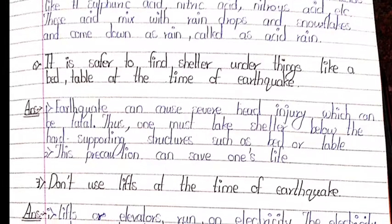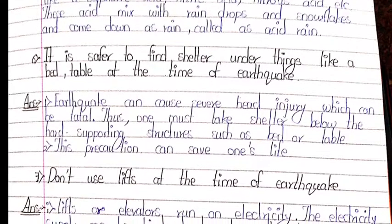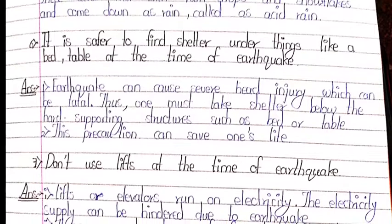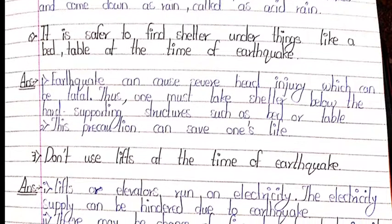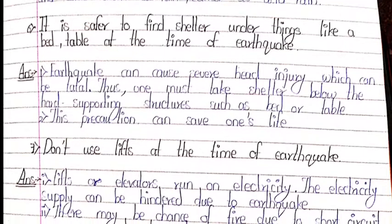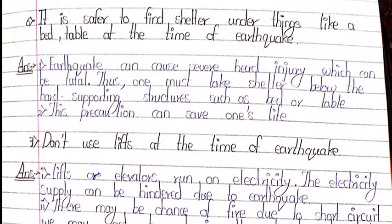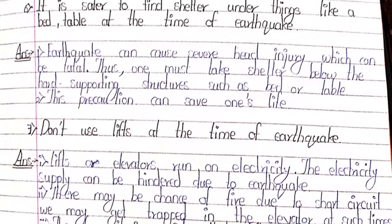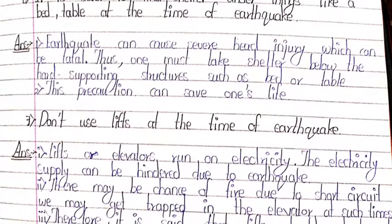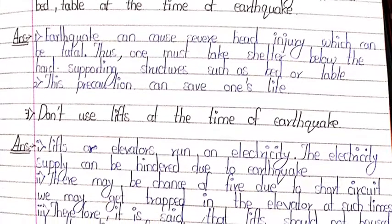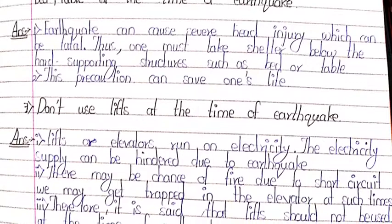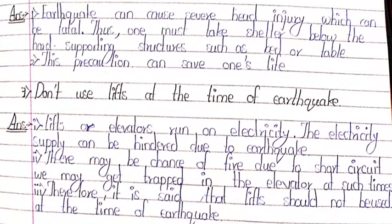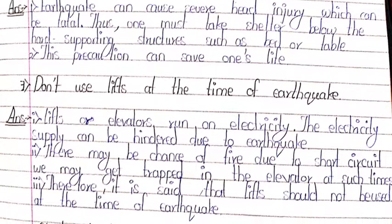Sixth: it is safer to find shelter under things like a bed or table at the time of an earthquake. Earthquakes can cause severe head injury which can be fatal. Thus, one must take shelter below hard supporting structures such as a bed or table. This precaution can save one's life. Seventh: don't use lifts at the time of an earthquake. Lifts or elevators run on electricity, and the electricity supply can be hindered during an earthquake. There may be a chance of fire due to short circuit, and we may get trapped in the elevator. Therefore, it is said that using lifts during an earthquake is very risky — don't use lifts at the time of an earthquake.